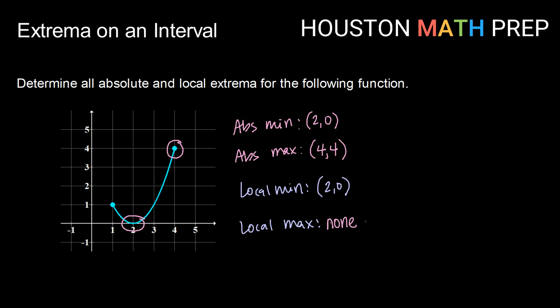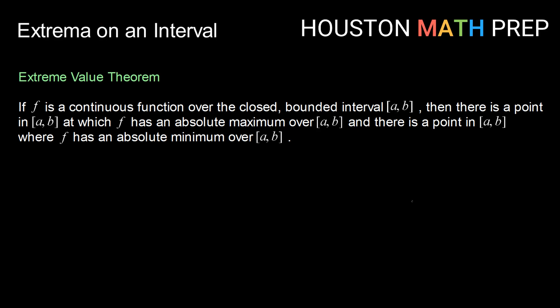We know we can do this from a graph, but how can calculus help us find these things or tell us whether or not they exist? All of that begins with the extreme value theorem. The extreme value theorem talks to us about the existence, or lack thereof, of absolute extrema. It says: if f is a continuous function over a closed and bounded interval from a to b, then there is a point in that closed interval at which f has an absolute maximum, and there is a point where f has an absolute minimum. So the extreme value theorem says if we can show that our function is continuous on a closed interval, it will achieve an absolute minimum and an absolute maximum — at least one of each.